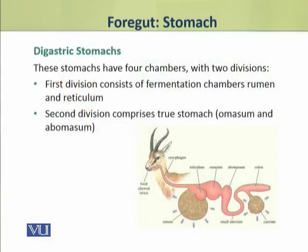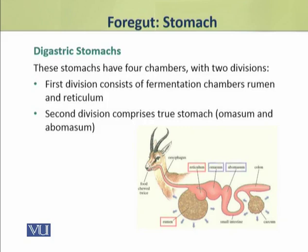Jo digastric stomachs hote hain, in ki do major divisions hote hain. Har division mein do-do chambers hote hain, is taray se overall they have four chambers, lekin do-do divisions. First division has fermentation chambers which are called rumen and reticulum. Jabke doosri division mein omasum aur abomasum hote hain. In chambers ko true stomach, jo ke basically secretory hota hai, inhey true stomachs samjha jata hai.